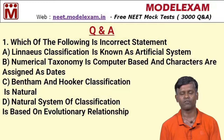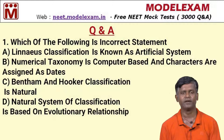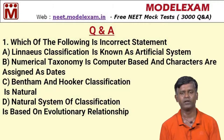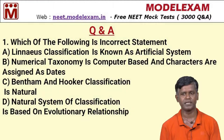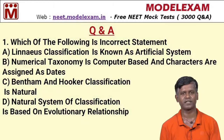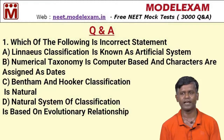The first question: which of the following is an incorrect statement? Option A: linear classification is known as the artificial system. Option B: numerical taxonomy is computer-based and characters are assigned as states. Option C: Bentham and Hooker's classification is natural. Option D: the natural system of classification is based on evolutionary relationship. Let's analyze each option one by one.